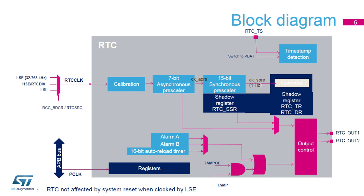Then, a 15-bit programmable synchronous prescaler provides the CKSPRE clock. CKSPRE must be 1 Hz in order to update the time and date BCD registers in one-second increments. The sub-second register resolution is defined by the CKAPRE frequency. By default, it is 256 Hz. The SSR register resolution is increased by reducing the asynchronous prescaler value. The asynchronous prescaler can also be bypassed; in this case, the sub-second register resolution is defined by the RTC clock frequency.